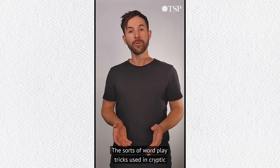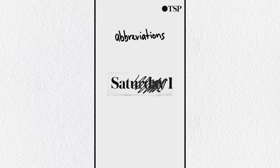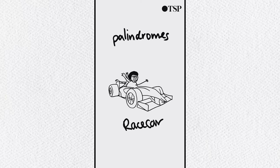The sorts of wordplay tricks used in cryptic crosswords are things like anagrams, like 'act' and 'cat', abbreviations like 'saturday' and 'sat', acronyms like 'NASA', palindromes like 'race car', and homophones like 'nose' and 'knows'.